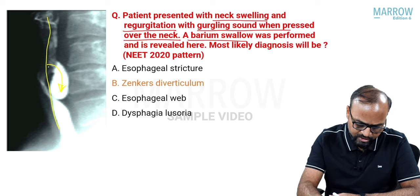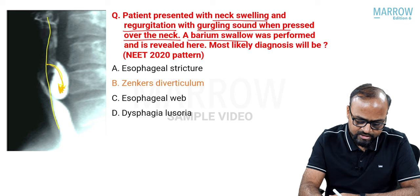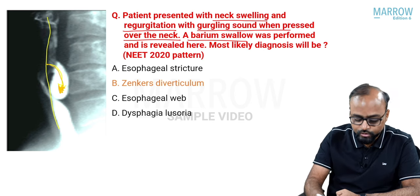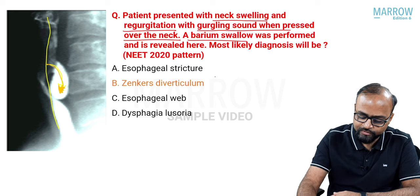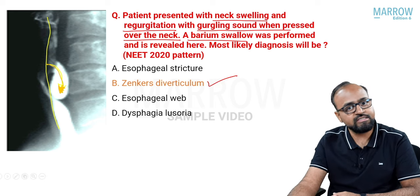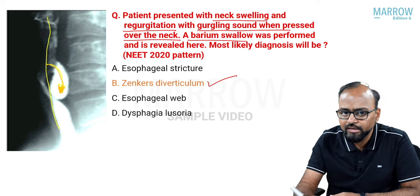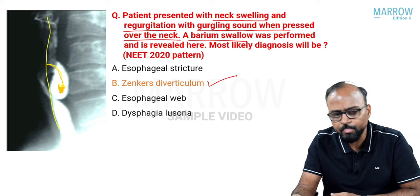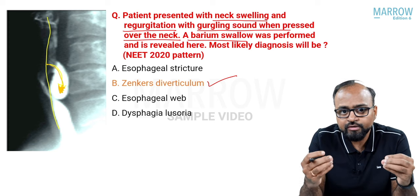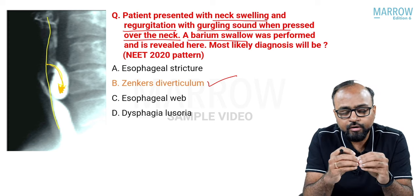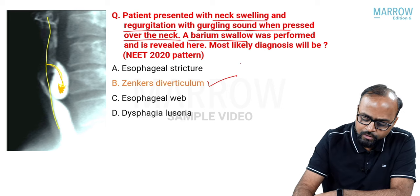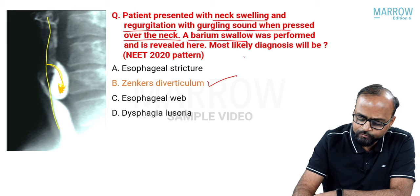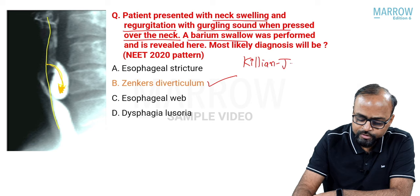This posteriorly directed outpouching coming towards the posterior direction from the esophagus is Zenker's diverticulum. It occurs at the Killian's dehiscence — the weak point in the wall of the pharynx and cricopharynx. Another diverticulum known to occur along the esophagus is called Killian-Jamison diverticulum.